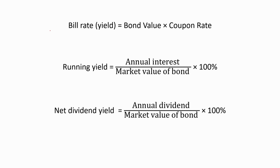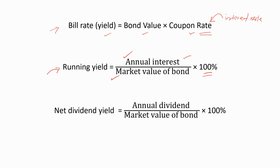We can calculate the bill rate or yield using the formula: bill rate or yield equals bond value multiplied by the coupon rate. When it comes to bonds and debentures, the interest rate is called the coupon rate — so when you see 'coupon rate,' you know it refers to a bond or debenture. We can also calculate the running yield, which equals annual interest divided by the market value of the bond, multiplied by 100%. Important: you must calculate the annual interest on the nominal value of the bond — do not use the interest rate directly in the denominator; use the market value of the bond.